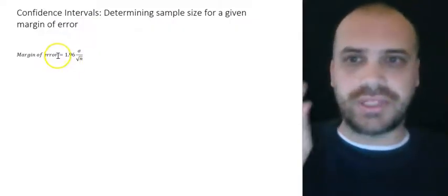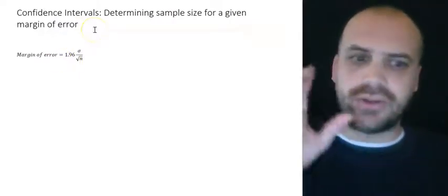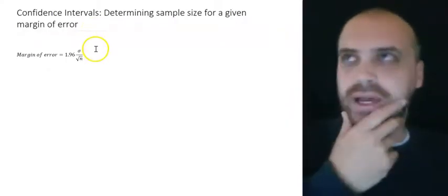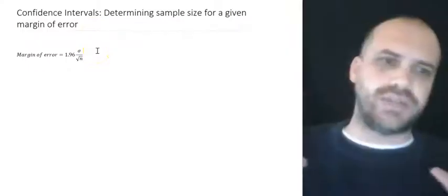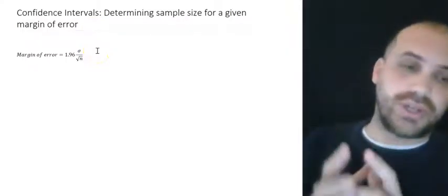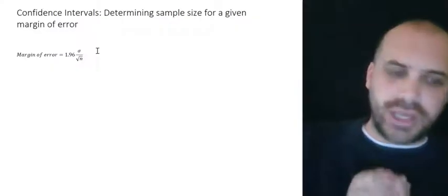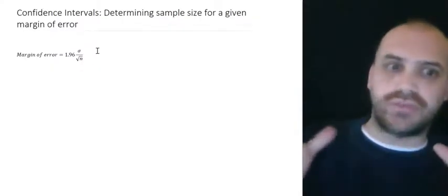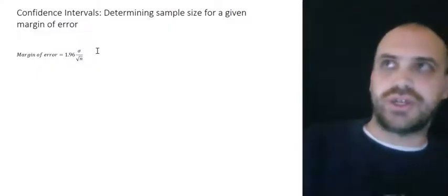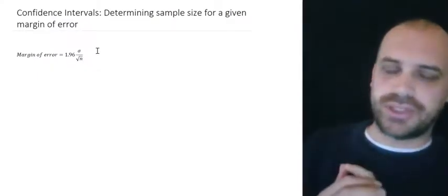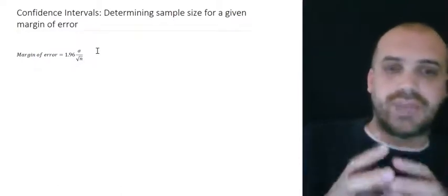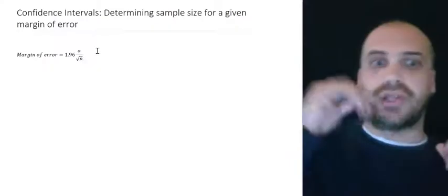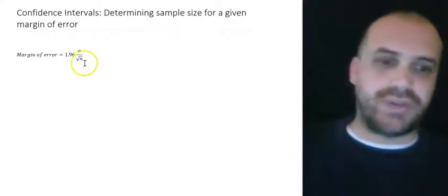That's going to give us our margin of error. Now, the sample size is going to change that margin of error. Imagine if you had a population of 600 and you took a sample size of 600. The margin of error would be zero because you would have all of the information from the population. If you choose only a couple of people from the population, then the margin of error, the standard deviation is going to be large and the margin of error is going to be large. So the larger your sample size, the lower the margin of error.